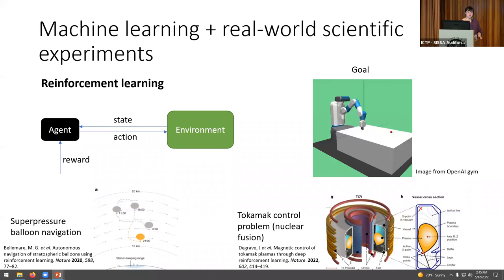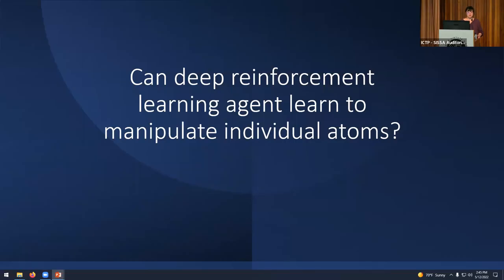So here in our work, we want to expand the application to atomic scale experiments. The question we want to answer here is, can we train the deep reinforcement learning agent to manipulate individual atoms?